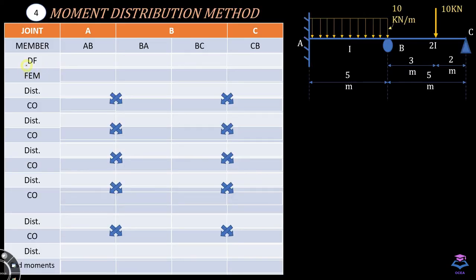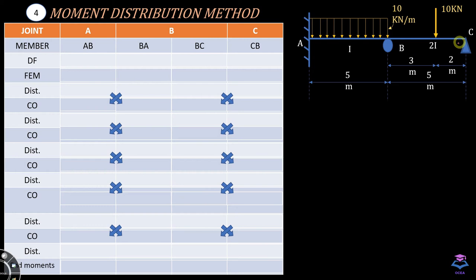After calculating the distribution factors and fixed end moments, we use a table for further calculations. The first row indicates the joint — there are three joints: A, B, and C. The second row indicates the members attached to each joint. Joint A has member AB; joint B has members BA and BC; joint C has member CB.